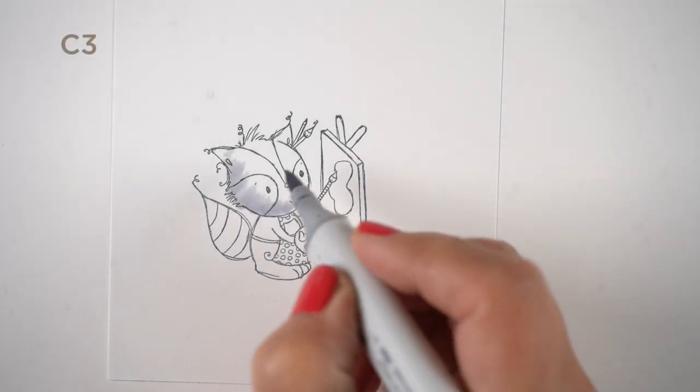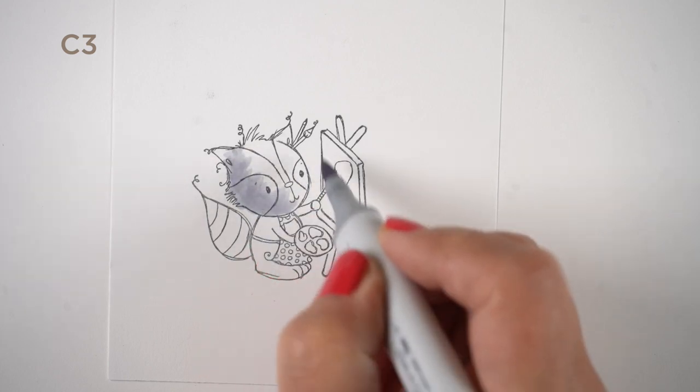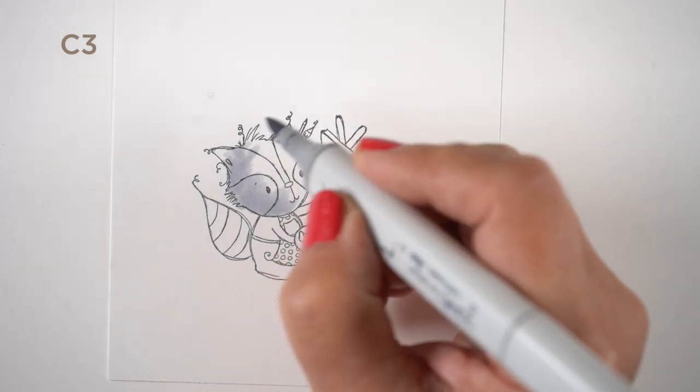You need to use dark enough colors that they can counteract the weight of the black lines, or stamp it in a lighter ink so you can do that.